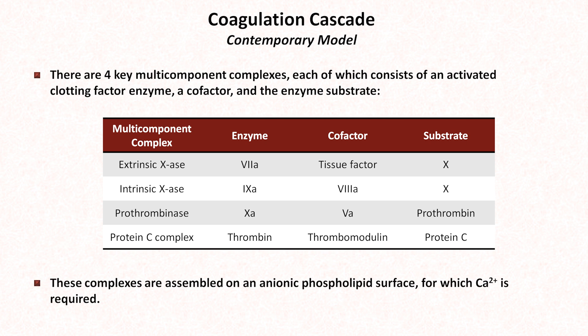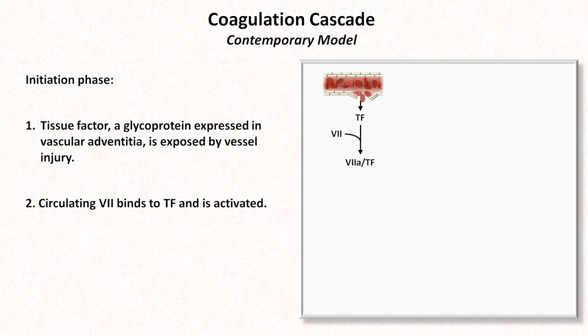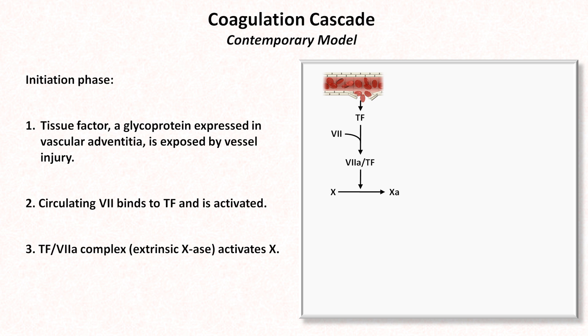These complexes are assembled on an anionic phospholipid surface for which calcium is required. The contemporary model's most important distinction from the traditional one is the central importance of tissue factor as the primary trigger for the whole cascade. Tissue factor is a membrane glycoprotein expressed in vascular adventitia. During the initiation phase, when it is exposed by vessel injury, it binds to factor 7 which is then activated. The tissue factor–activated 7 complex, which combines with factor 10 on the plasma membrane, forms the first of the four key multicomponent complexes, referred to as the extrinsic tenase.